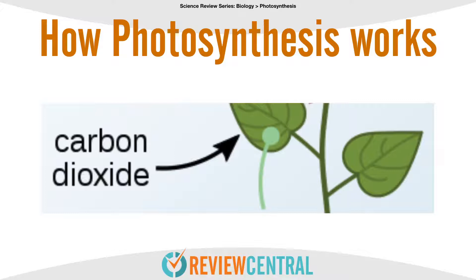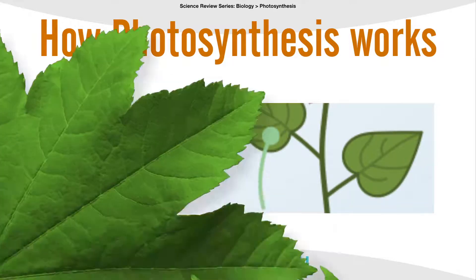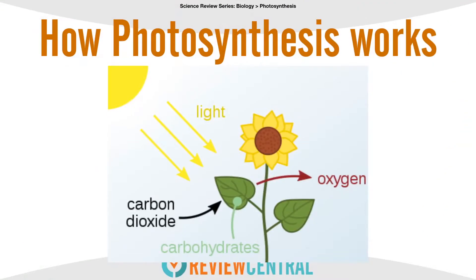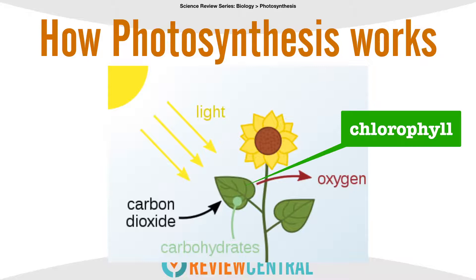Photosynthesis is now ready to take place, but it needs energy. The energy to fuel photosynthesis comes from sunlight. The green pigment in the leaves of plants, known as chlorophyll, is necessary in order for plants to convert carbon dioxide and water, using sunlight, into oxygen and carbohydrate molecules, most commonly glucose.